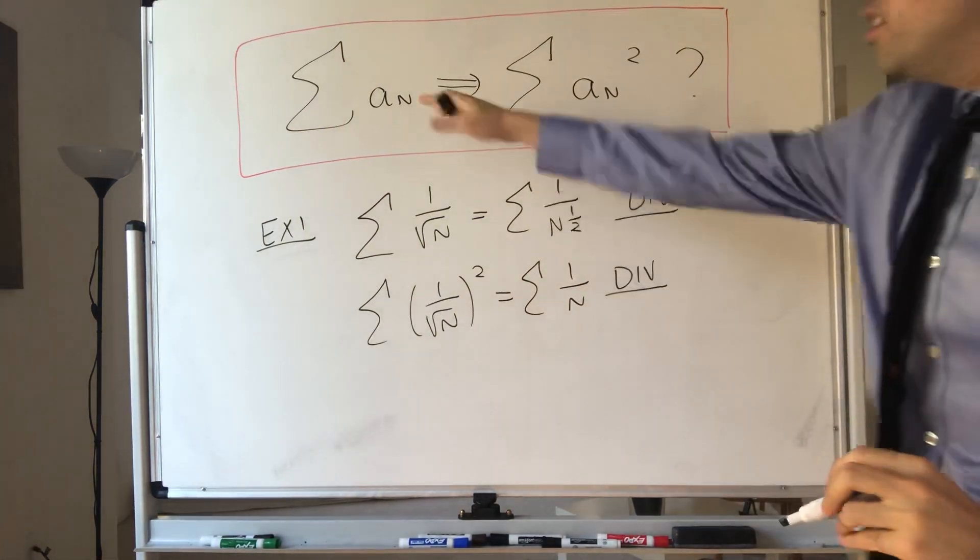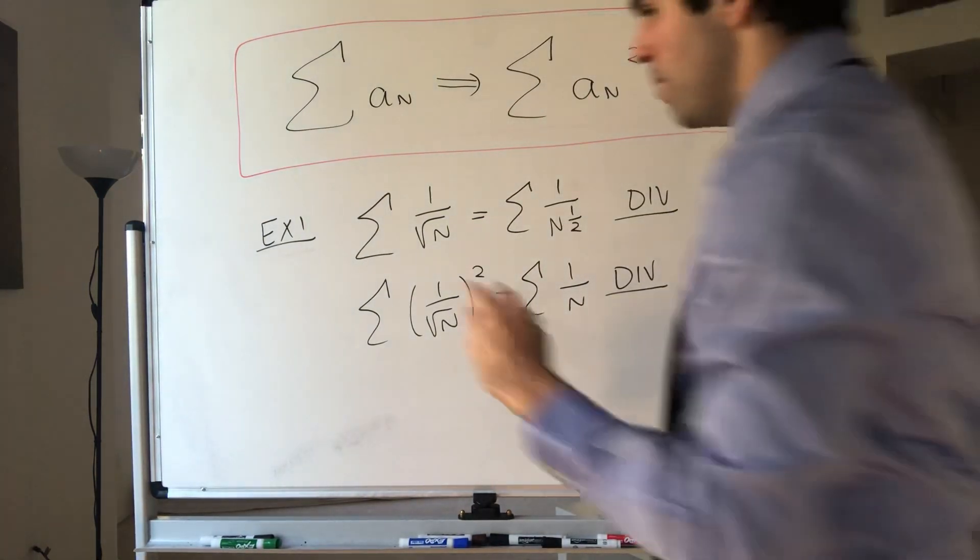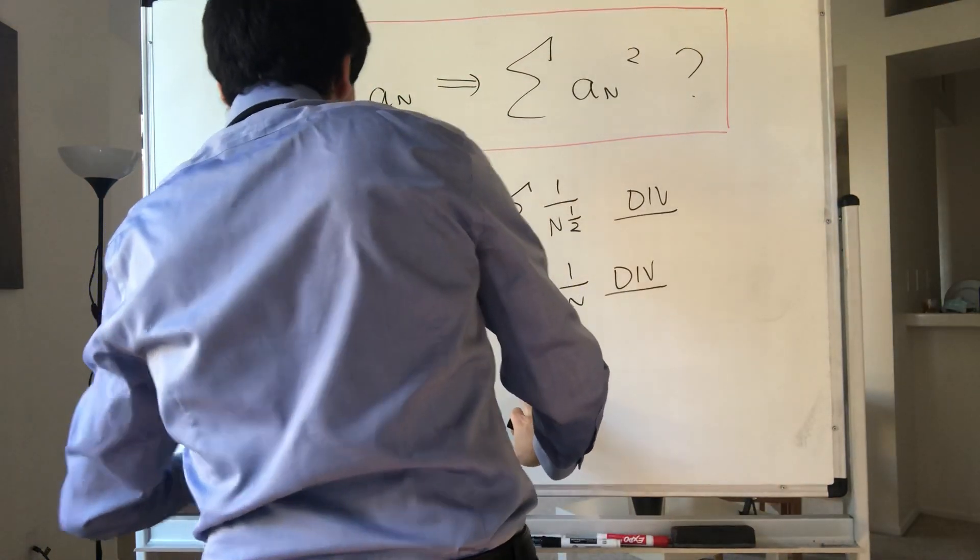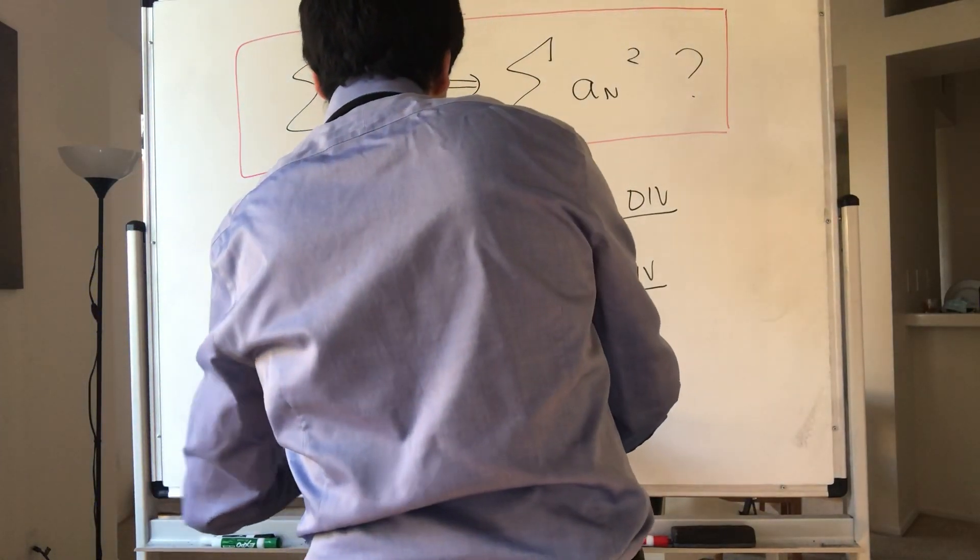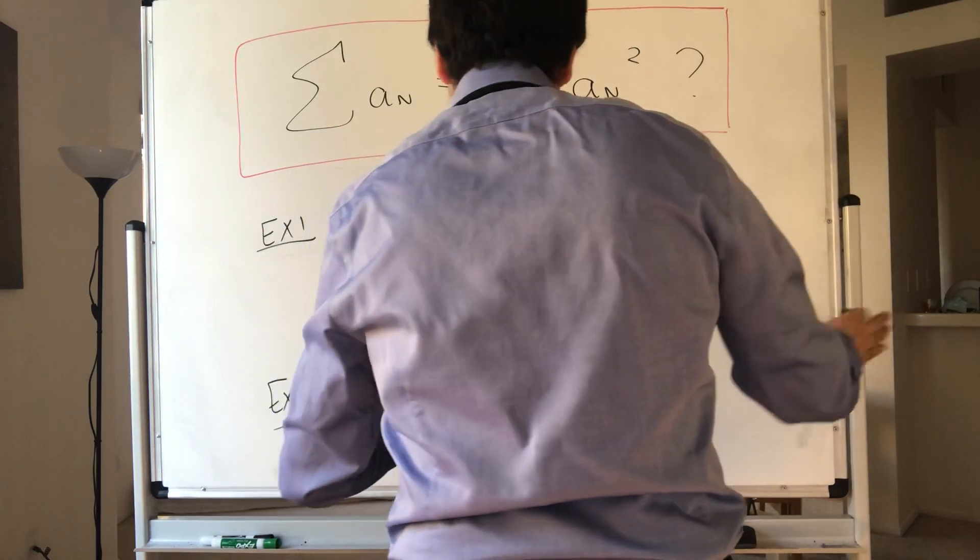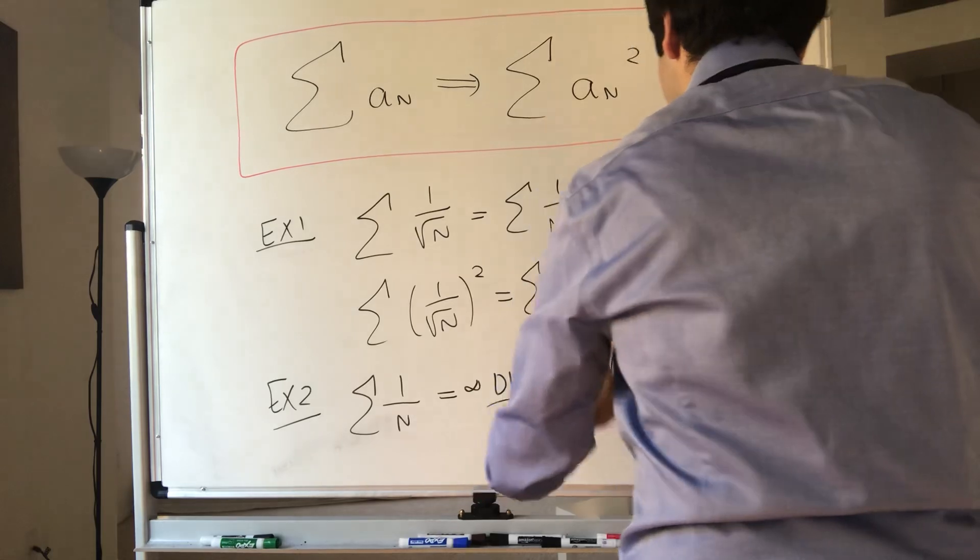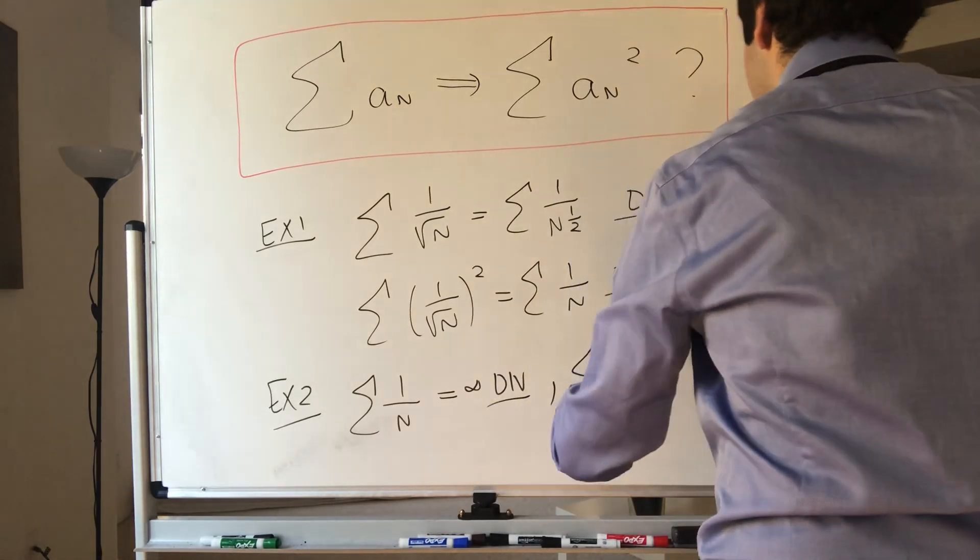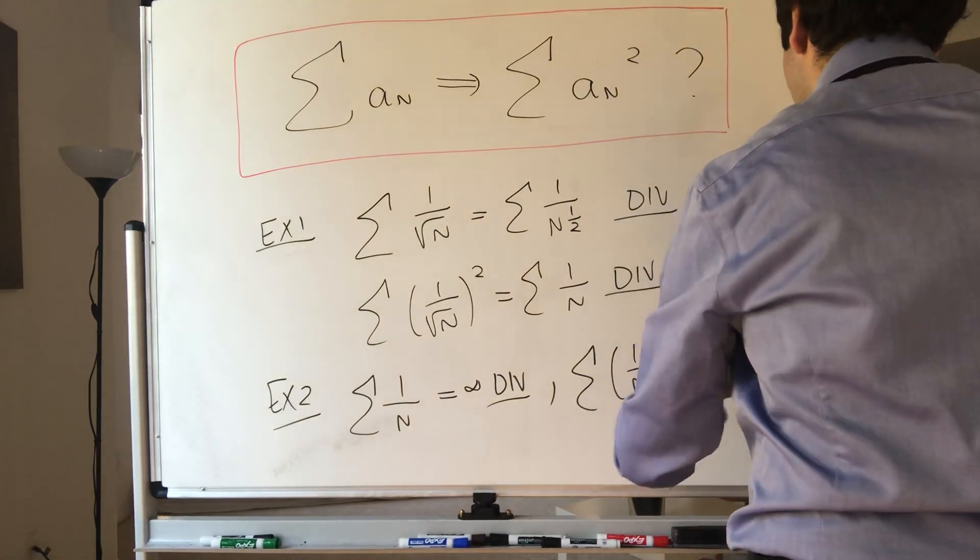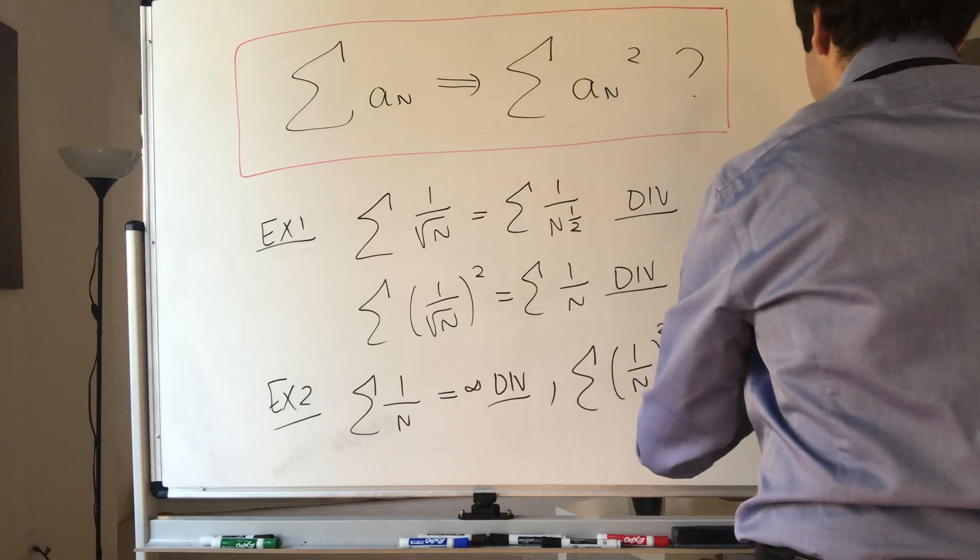So if this diverges, this might diverge, but also in other cases, for instance, you have the one series, which diverges, but the square of that, which is one over n squared, this converges.